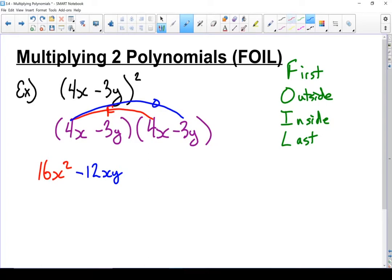Inside two terms. Well, that's the two on the inside here. It's my inside two terms. Negative 3y times 4x. Well, that's the same as last time. It's going to give me another negative 12xy. And then my last two terms. So the last one from this binomial times the last one from that binomial. Negative 3 times negative 3 gives me positive 9. y times y gives me y squared.